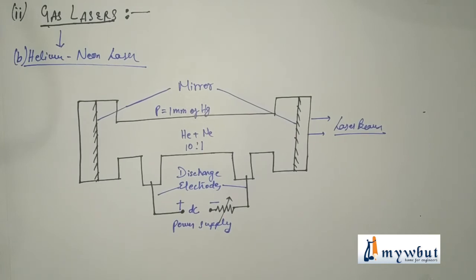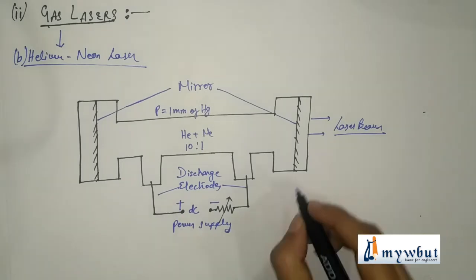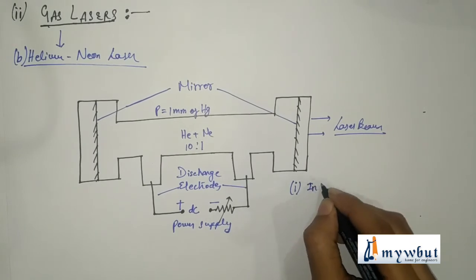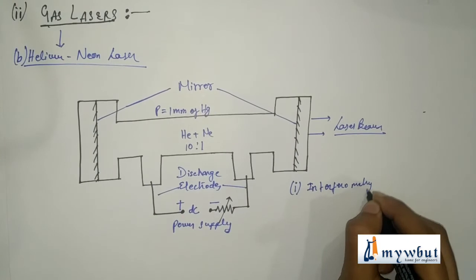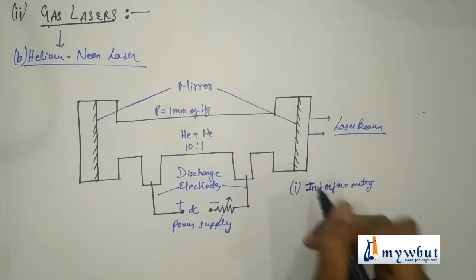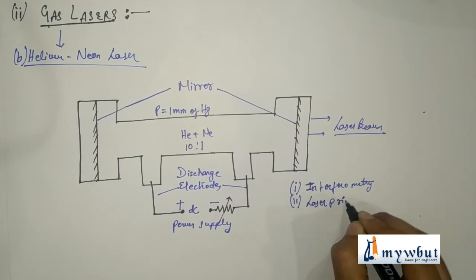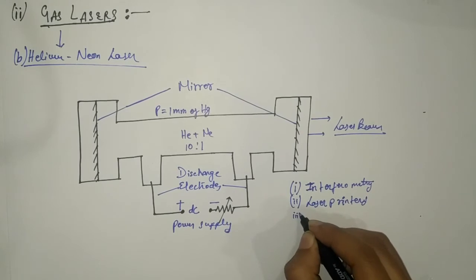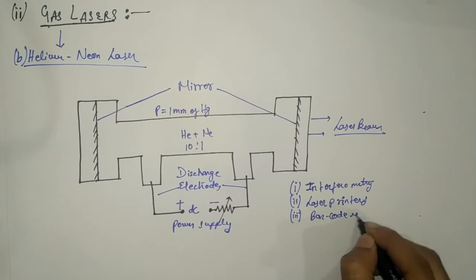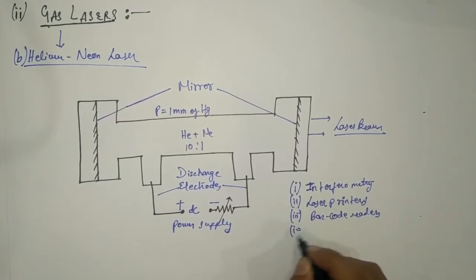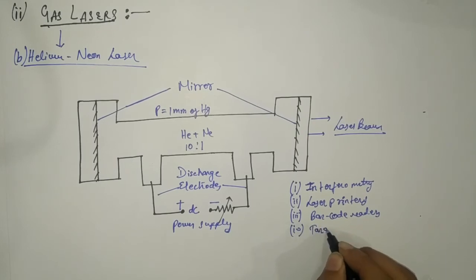Now we will see uses of helium neon laser. Where it is used? Number one, it can be used in interferometry. That is studying of interferometry. Number two, it can be used as laser printers or laser printing devices. Number three, it is used in barcode readers. Number four, it is used for target fixing or aiming in guns. And there are more uses of helium neon laser.